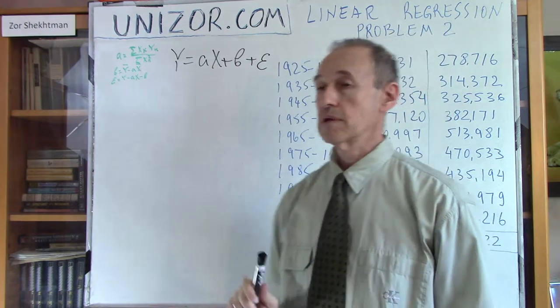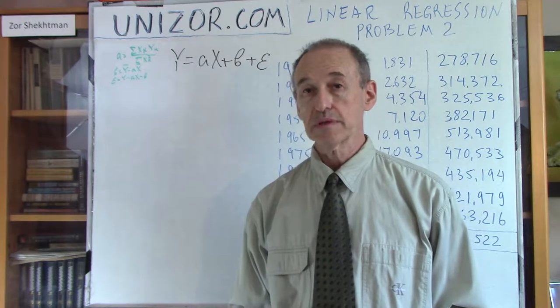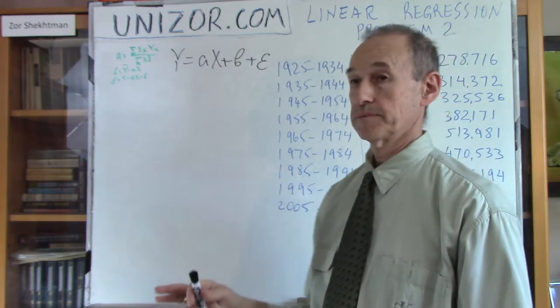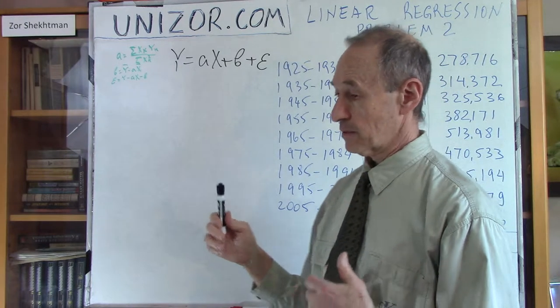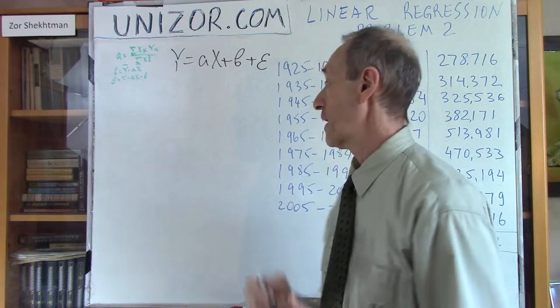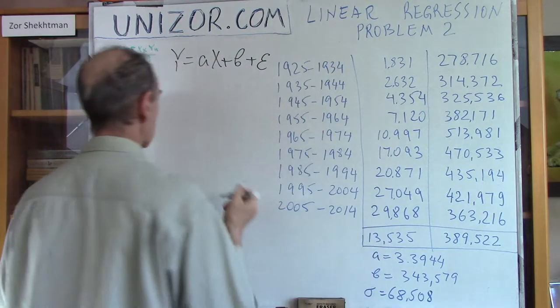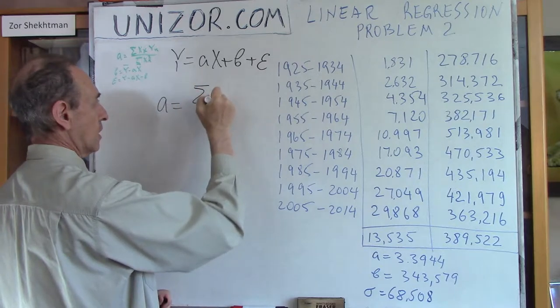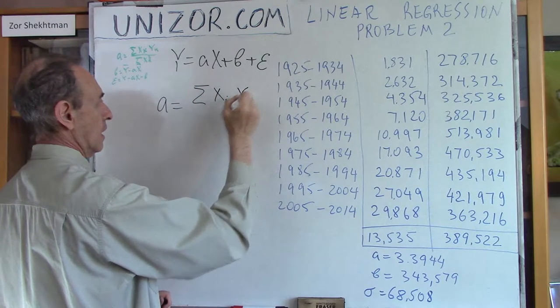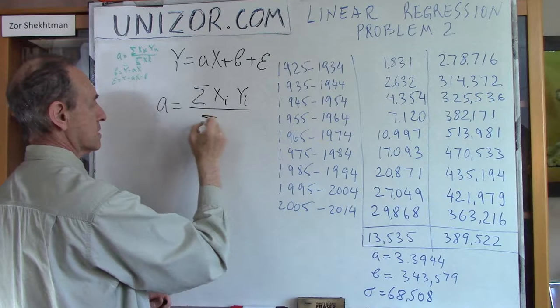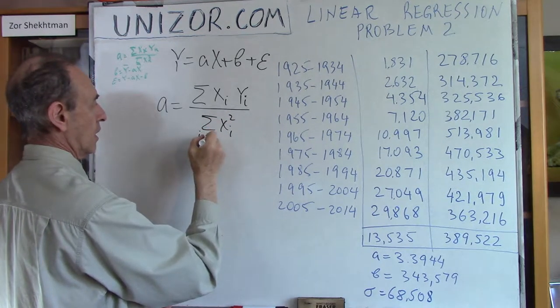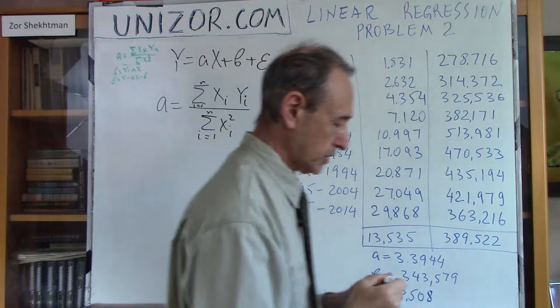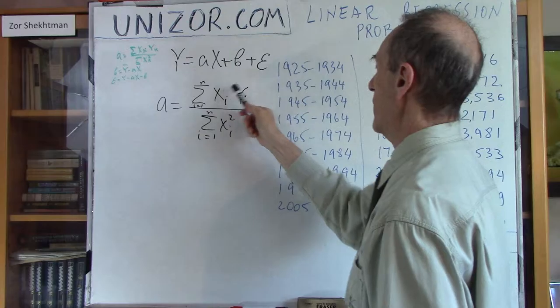What I am trying to establish is some kind of a dependency which looks like this, where Y is number, a random variable, which is number of fatalities. X is mileage covered. And epsilon is some kind of error, the deviation of this number from this. My purpose is to establish A, to establish B, based on whatever the data I have. And then, using these, find out the error and analyze, statistically analyze this error.